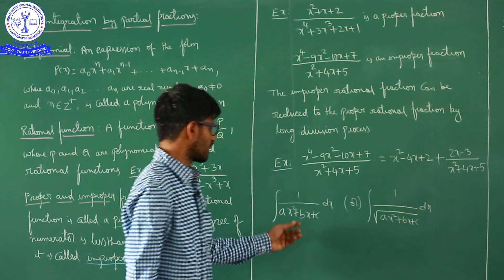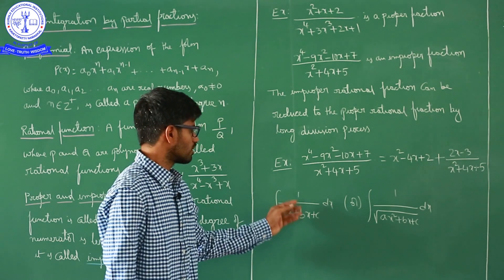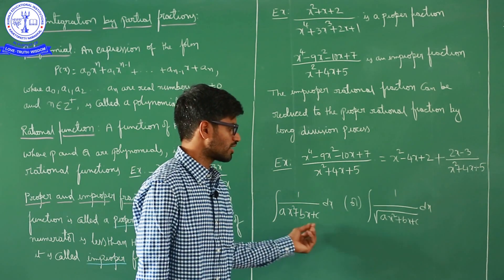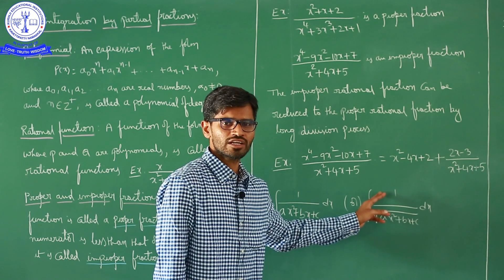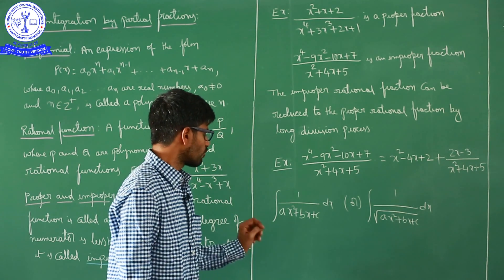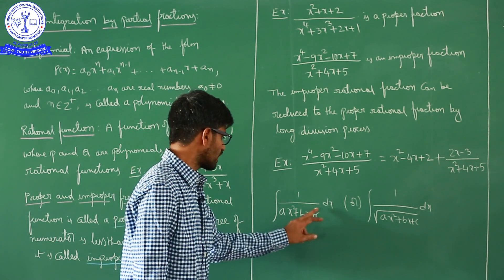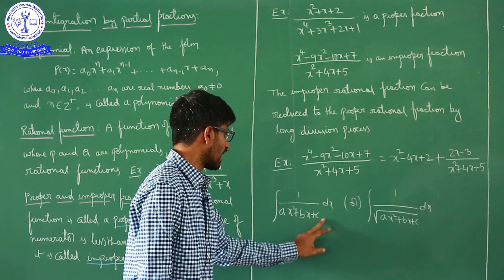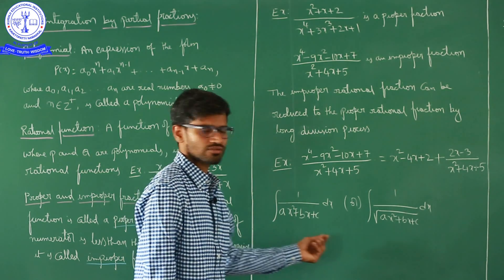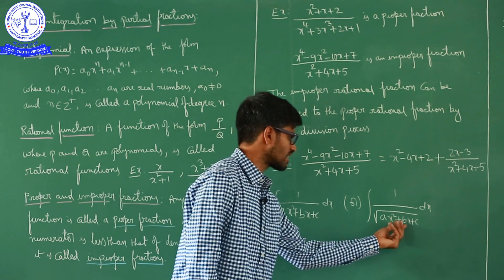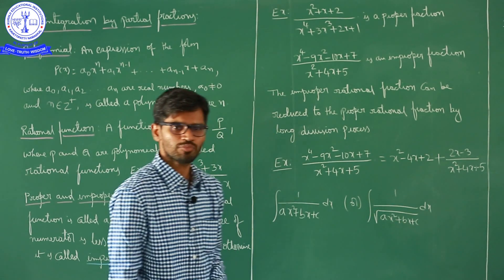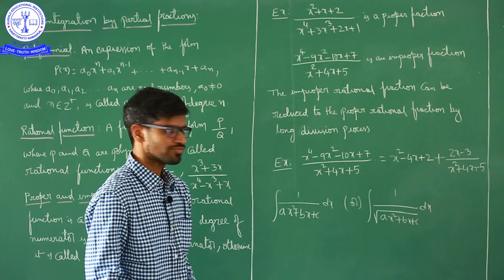For these types of problems, whenever you have some constant in the numerator and a quadratic in the denominator, or a constant in the numerator and square root of a quadratic in the denominator, we write the quadratic part as a sum of squares or difference of squares, then apply the corresponding formulas.